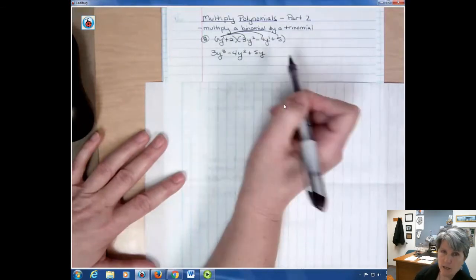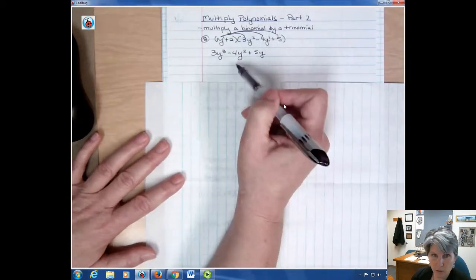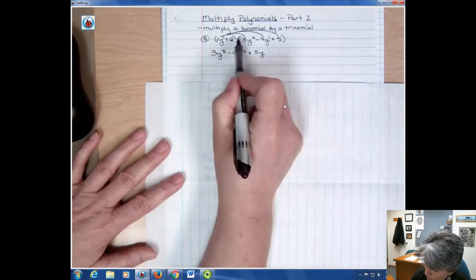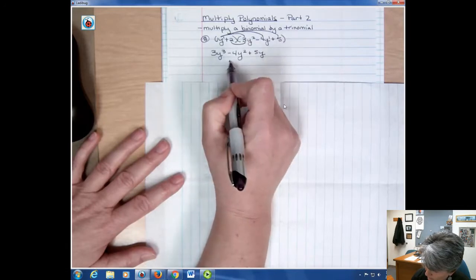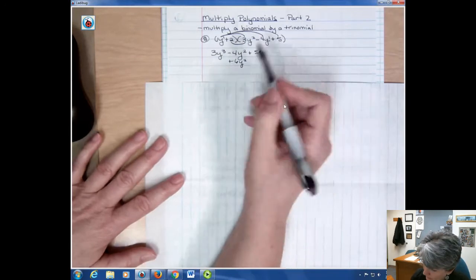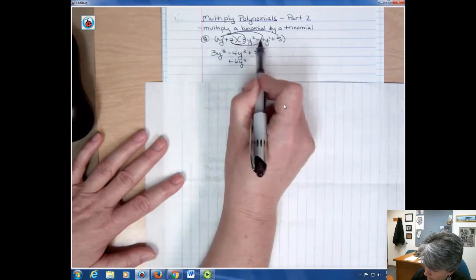Now when I do this method I tend to write the terms under each other as I go, like terms, so that just saves me time. Now I'm going to go back and do 2 times 3y squared. That's going to be plus 6y squared. Notice I lined it up under my other y squared term. And then I have 2 times negative 4y. Well that's negative 8y.